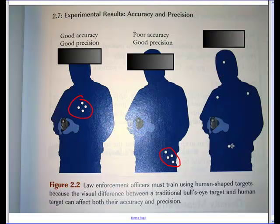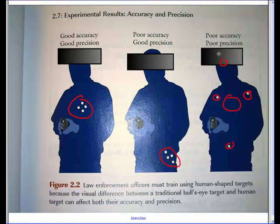And then this last one, shots are all over the place. Now this has definitely taken this guy down. You've got a head shot, you've got a couple shoulder shots, a shot in the stomach. But if we are aiming for this spot right here, we are not accurate and we are not precise since our values are all over the place. So this one right here is poor accuracy and poor precision.